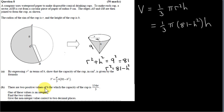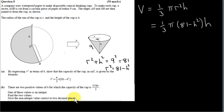There are two possible values of h for which the capacity of the cup is 154π divided by 3. One of these values is an integer. Find the two values, giving the non-integer value correct to two decimal places.